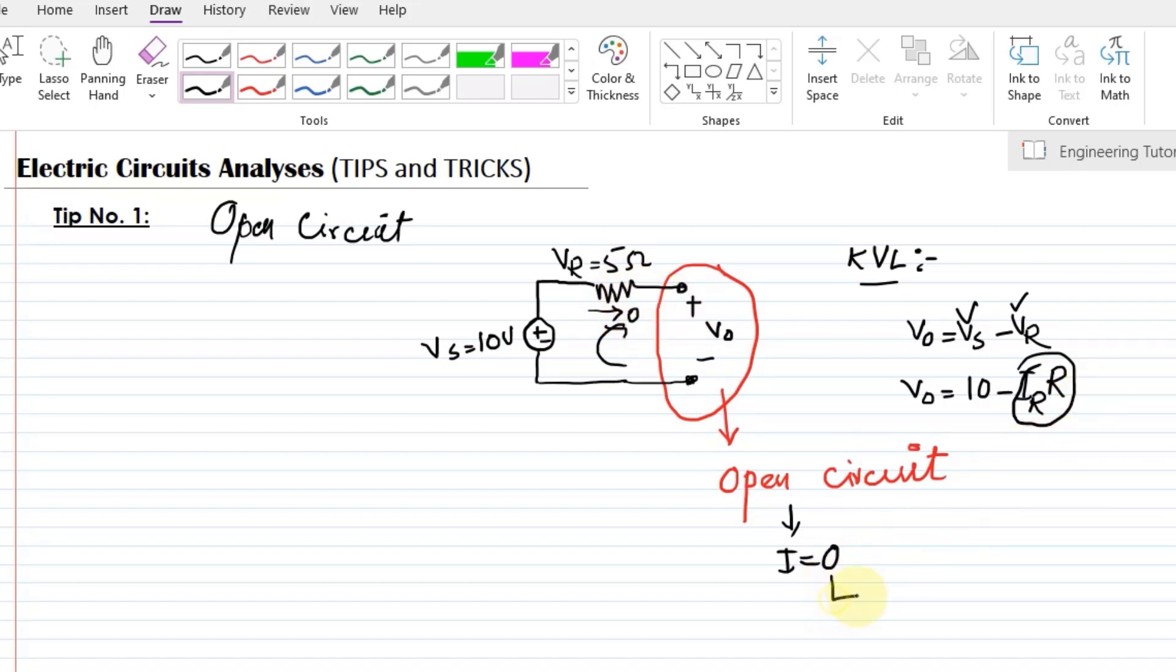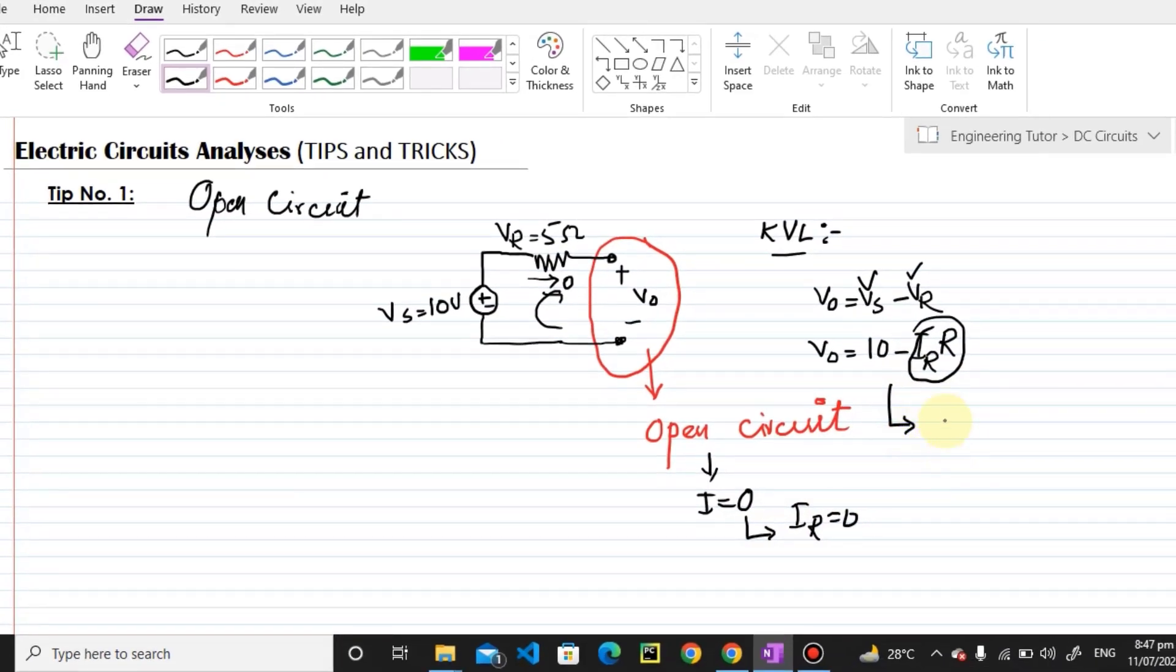As there is no current flowing through this circuit, therefore this formula will give me V naught equal to 10 minus 0 multiplied by r which will ultimately give me the value of 10 volts.